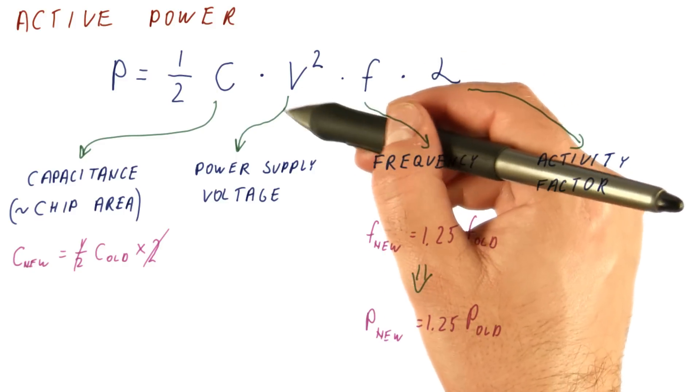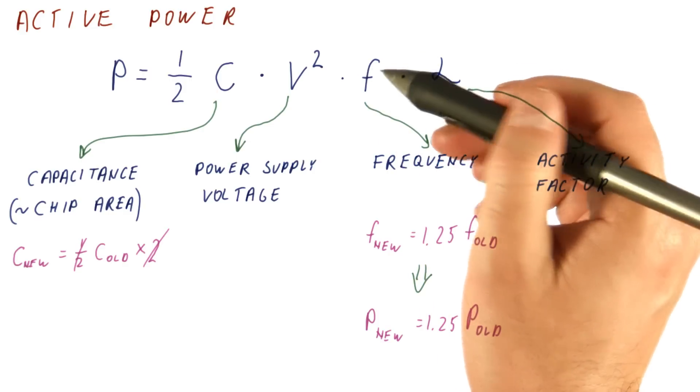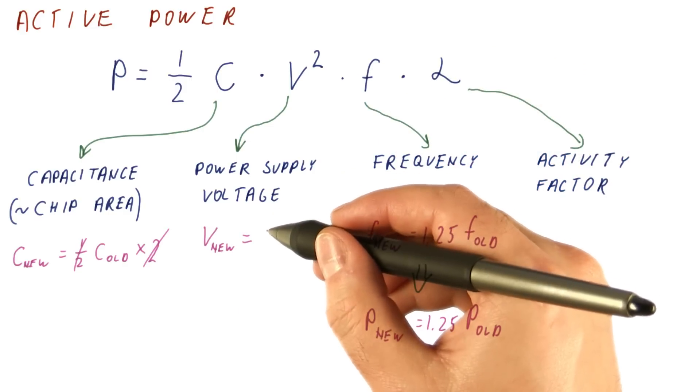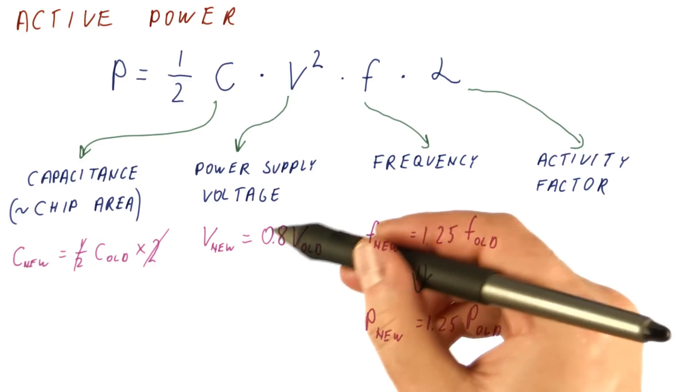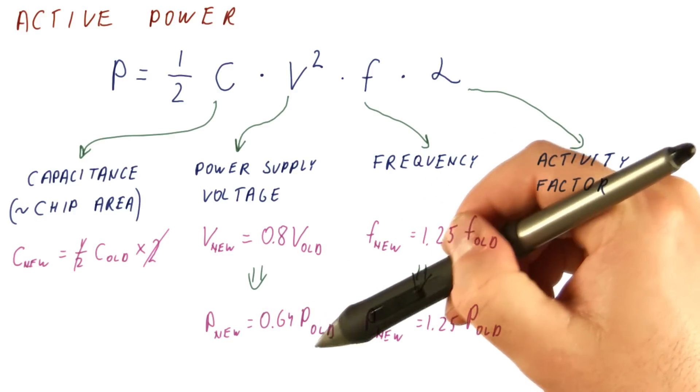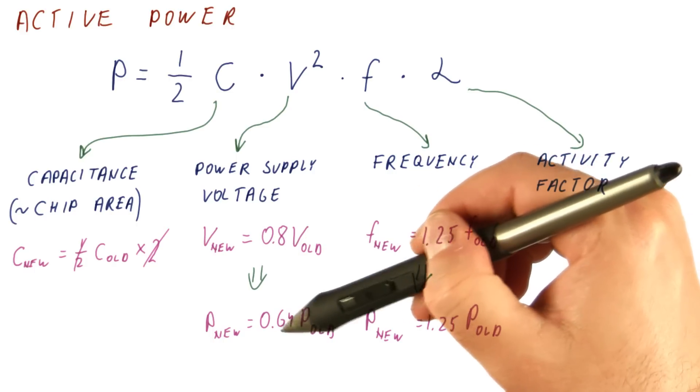Smaller transistors, however, may let us lower the power supply voltage while maintaining the same speed. So let's say that the new power supply voltage is equal to 0.8 of the old power supply voltage. That allows us to have a significantly lower power consumption because of this square relationship, so 0.8 squared is 0.64.